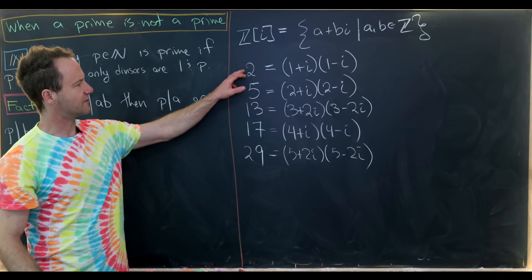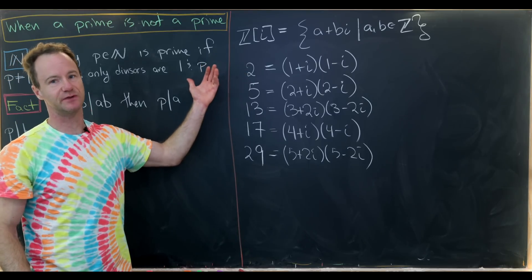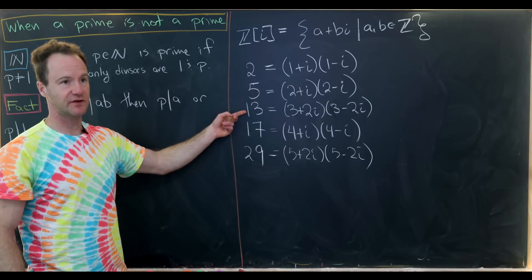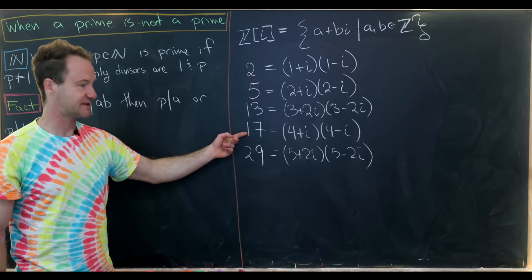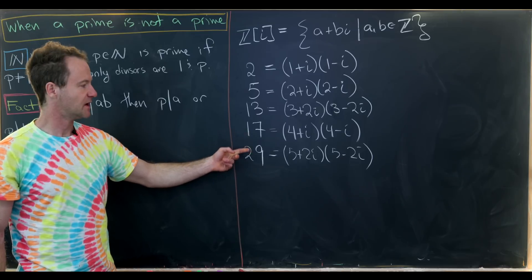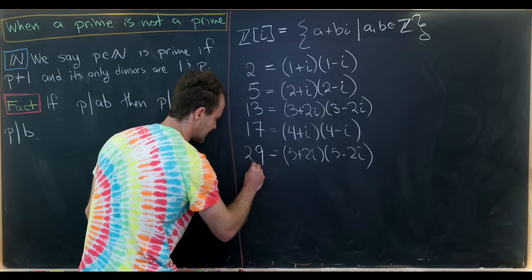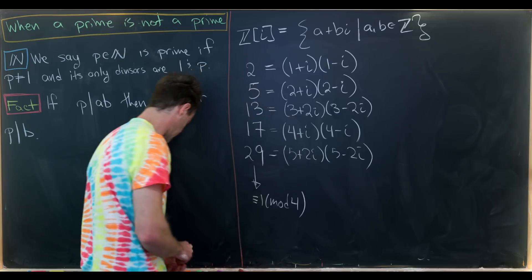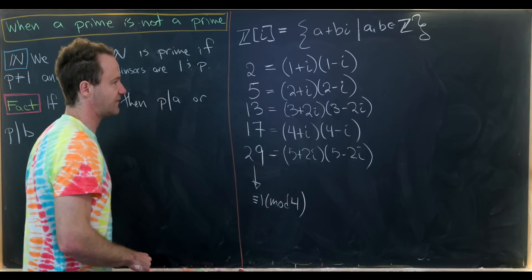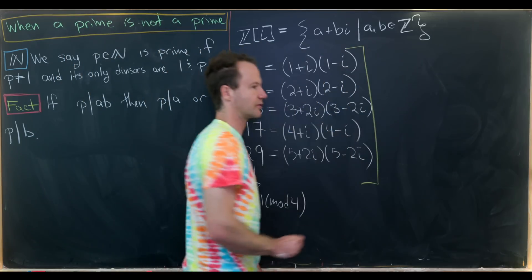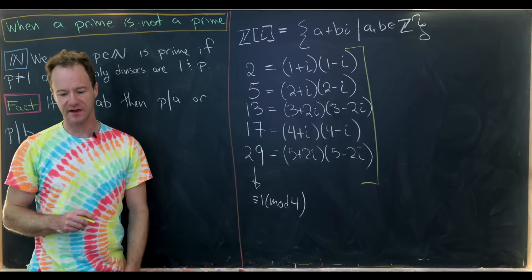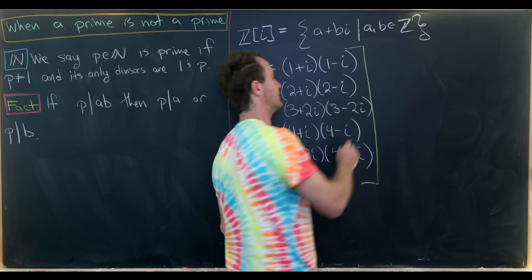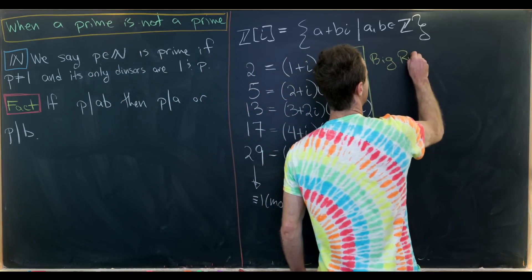Looking at these examples — 2, 5, 13, 17, 29 — we notice that all of these are congruent to 1 modulo 4. The number 2 is unique as the only even prime, and the rest are all 1 more than a multiple of 4. This motivates the following big fact, which we won't prove here, although it has been proven on the channel in the playlist about writing natural numbers as sums of squares.